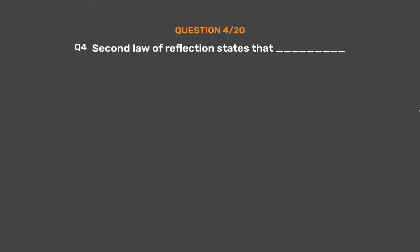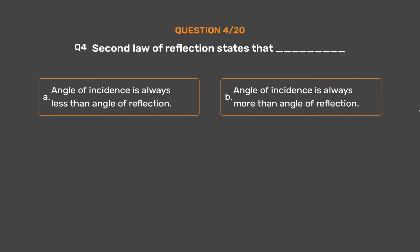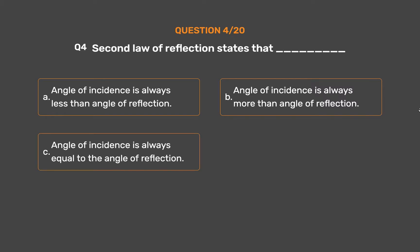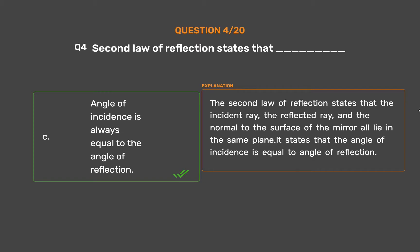Question number 4: The second law of reflection states that — Option A: Angle of incidence is always less than angle of reflection. Option B: Angle of incidence is always more than angle of reflection. Option C: Angle of incidence is always equal to the angle of reflection. Option D: None of these. The correct answer is Option C. The second law of reflection states that the incident ray, the reflected ray, and the normal to the surface of the mirror all lie in the same plane, and the angle of incidence is equal to the angle of reflection.